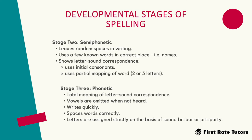The second stage is called the semi-phonetic stage. At this stage, children tend to leave random spaces in writing and use few words in correct places — for instance in names. They show some letter and sound correspondence, can use initial consonants, and can use partial mapping of words — so two or three letters.